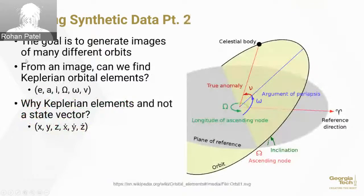Our goal is to generate plots of images from many different orbits. The fundamental question we ask is, if I give the model an image of an orbit, can it tell me what the orbit is? We define the orbit in these Keplerian orbital elements, where E is the eccentricity that defines how circular an orbit is, A is the semi-major axis that defines how big it is, the next three are angles that define its orientation, and the last is the true anomaly, which defines where you are in the orbit.